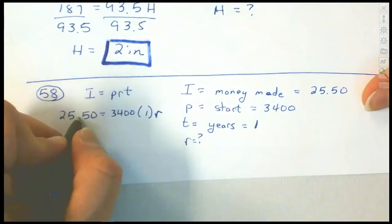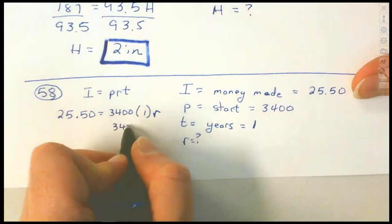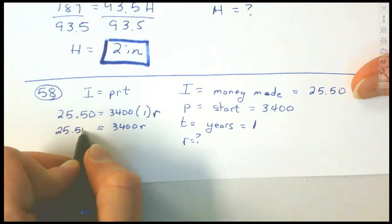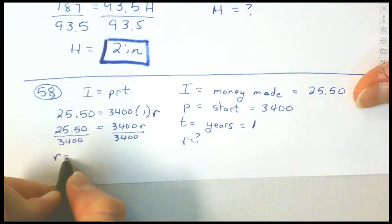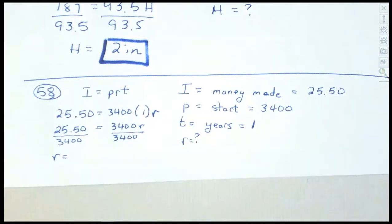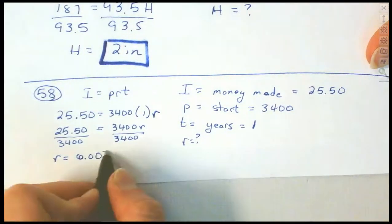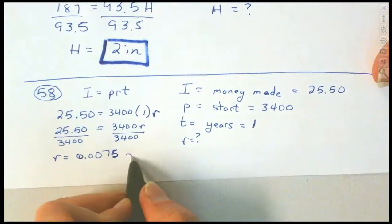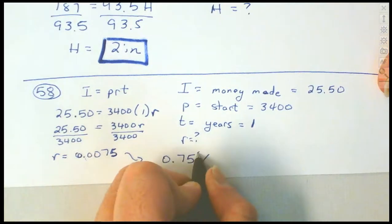You can put them in any order on the PRT. That gives us $3,400 on the right. Dividing both sides by $3,400 gives us a decimal. On these problems, we express the answer as a percentage. Dividing $25.50 by $3,400 gives us 0.0075. As a percentage rate, we move the decimal two places, giving us 0.75%.